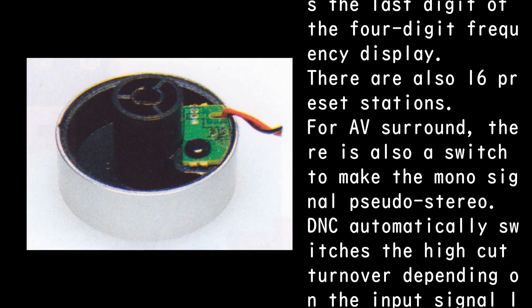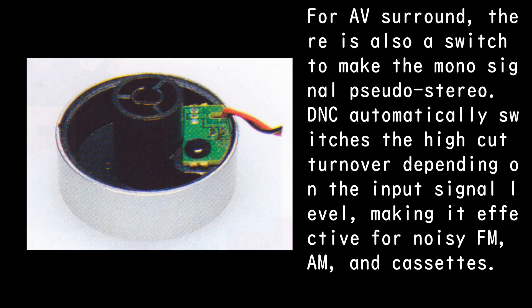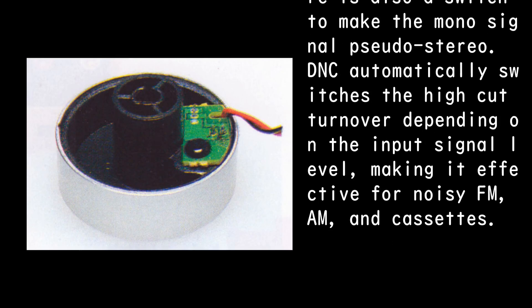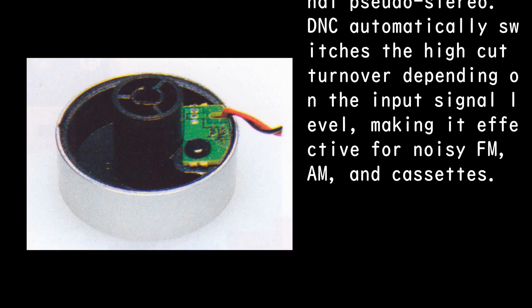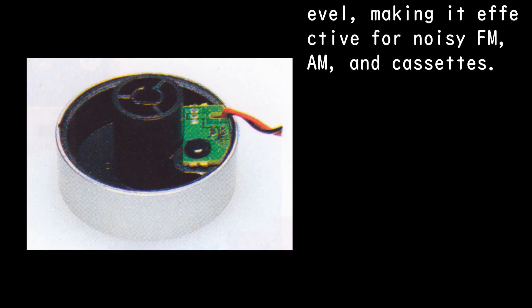For AV surround, there is also a switch to make the mono signal pseudo-stereo. DNC automatically switches the high-cut turnover depending on the input signal level, making it effective for noisy FM, AM, and cassettes.